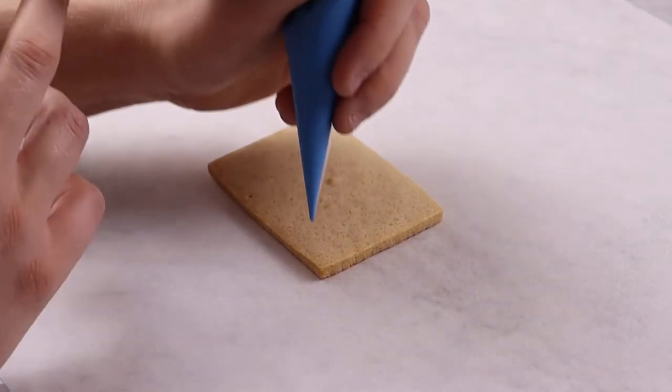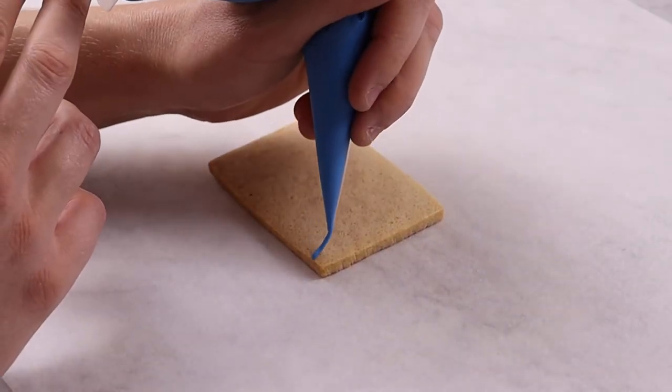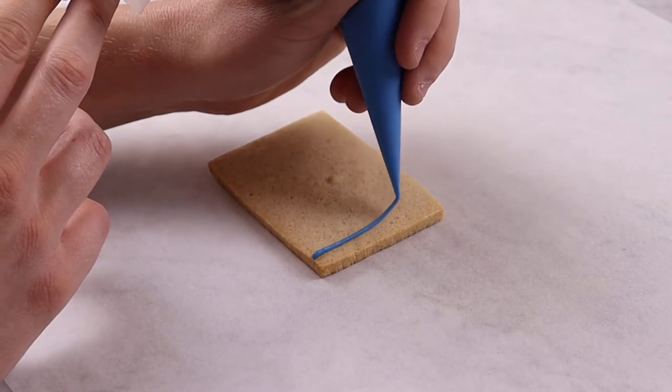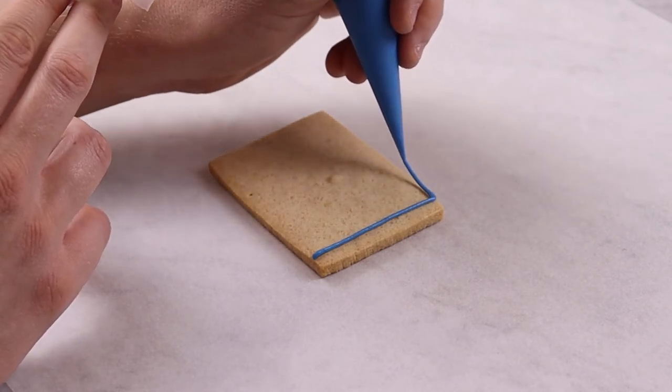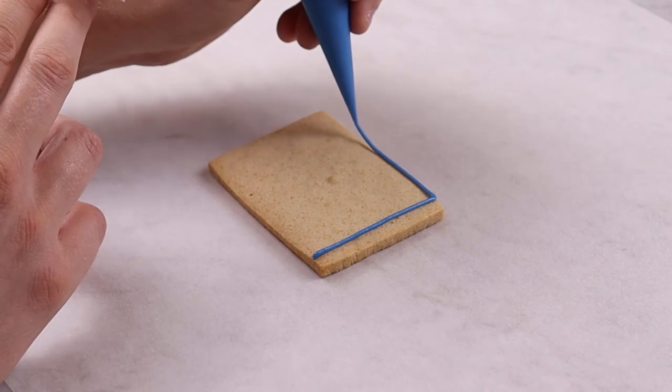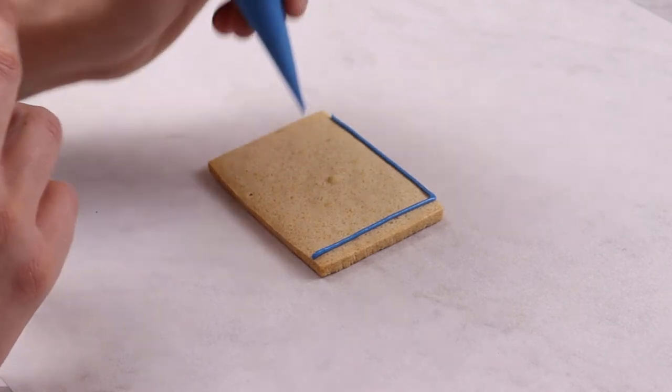We use line icing for all outlines on our hand iced biscuits. It acts as a barrier to keep flood icing contained in a single area, so it is important to make sure there are no gaps in the line icing when you are icing a biscuit.